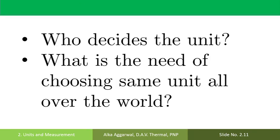Now the question is, who decides the unit and what is the need of choosing the same unit all over the world? The first essential thing about the choice of a standard unit for a physical quantity is its international acceptance. If everyone were to choose his or her own unit for the quantity, it will become a mess to communicate freely among scientists all over the world. A body named General Conference on Weights and Measures was set up and has authority to decide the units by international agreement.